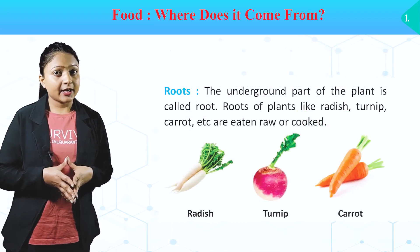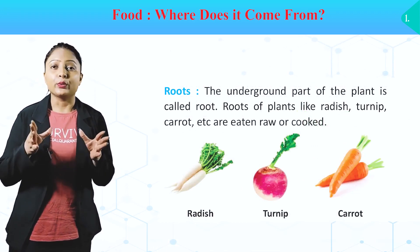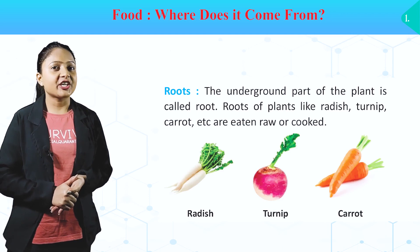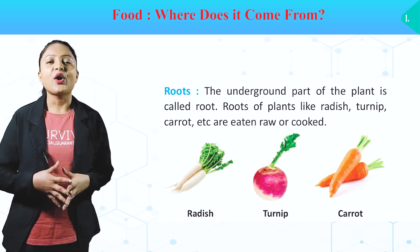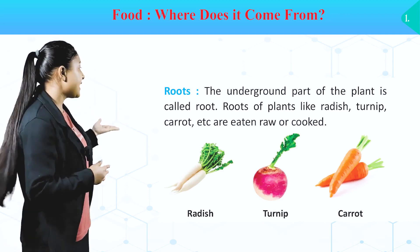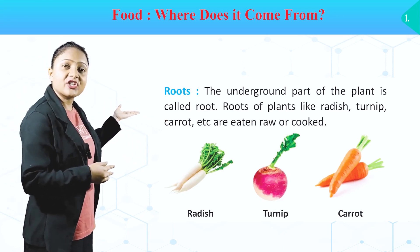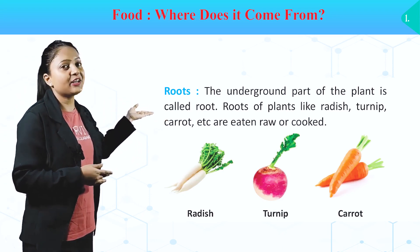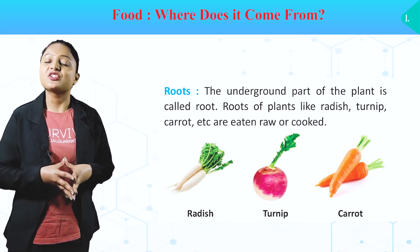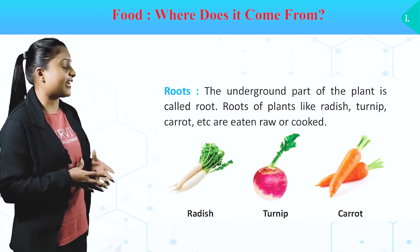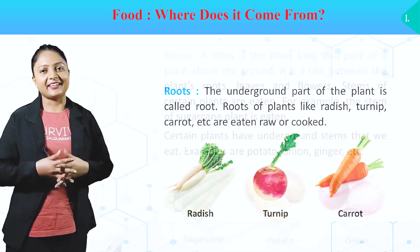Roots. The underground part of the plant is called root. Roots of plants like radish, turnip, carrot, etc. are eaten raw or cooked. These are the given pictures. In pictures mein humain different plants ke roots diye gaye hai jo ki humare food ka source bhi hai, jaisi ki radish, turnip, carrot.